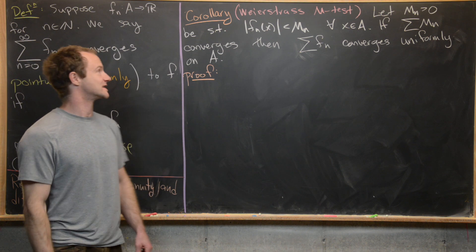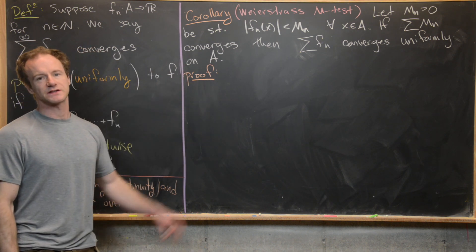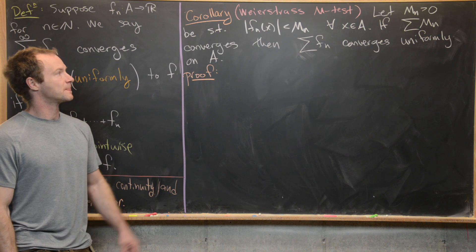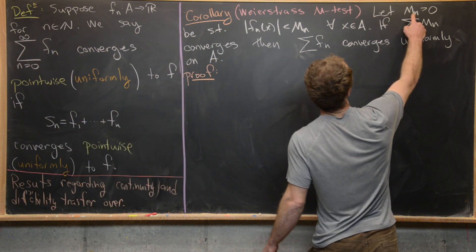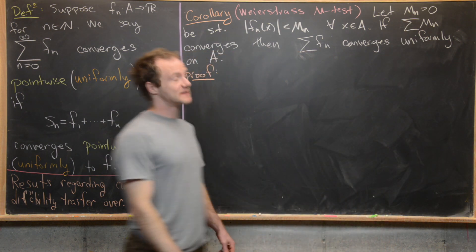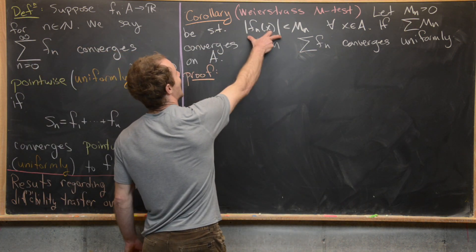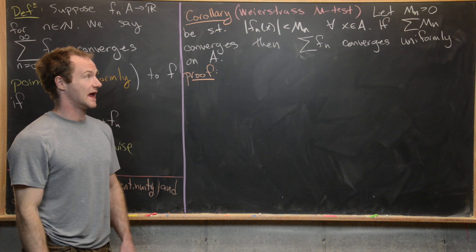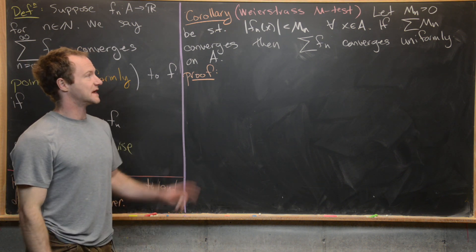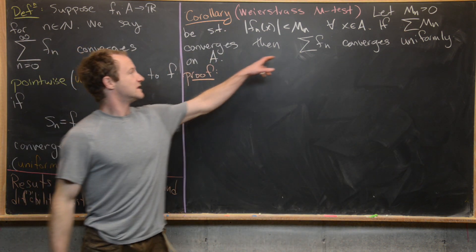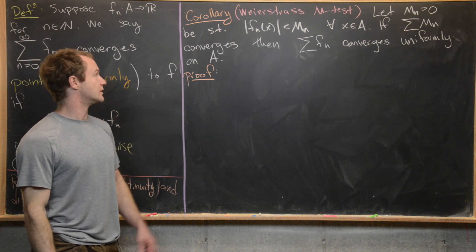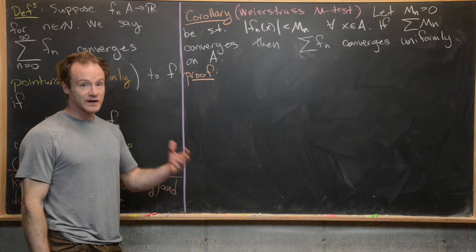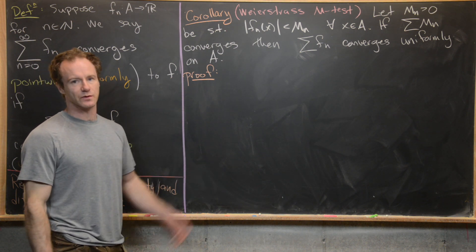We're going to prove something called the Weierstrass M-test. We have a sequence of functions f_n defined from A to the real numbers, and a sequence of positive numbers M_n such that the absolute value of f_n(x) is less than M_n for all x in A. We want to show that if the series of M_n converges, then the series of f_n converges uniformly on A. We'll use the Cauchy criterion for series of numbers and series of functions.